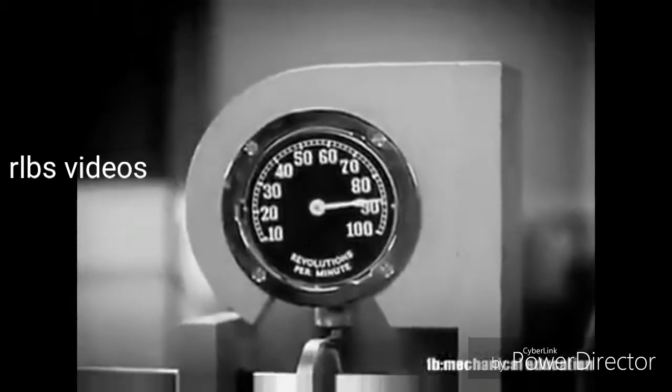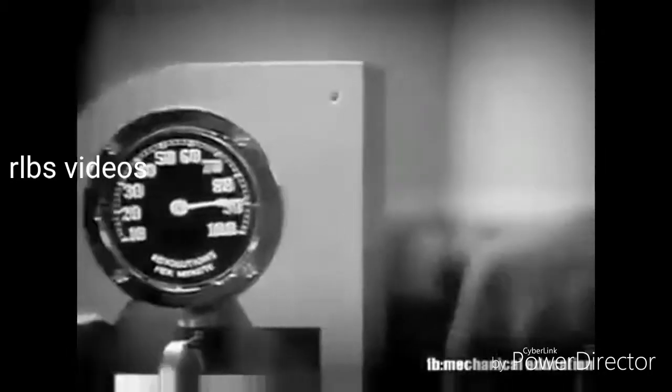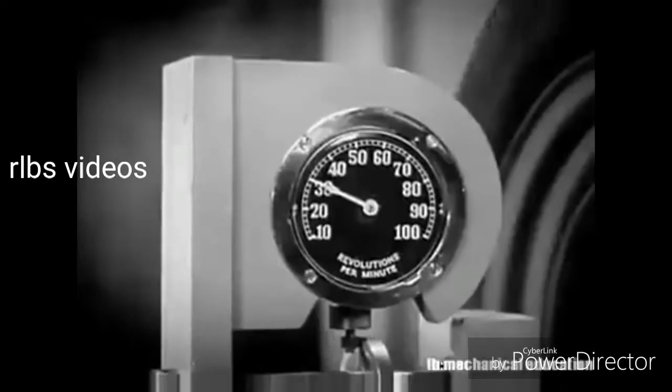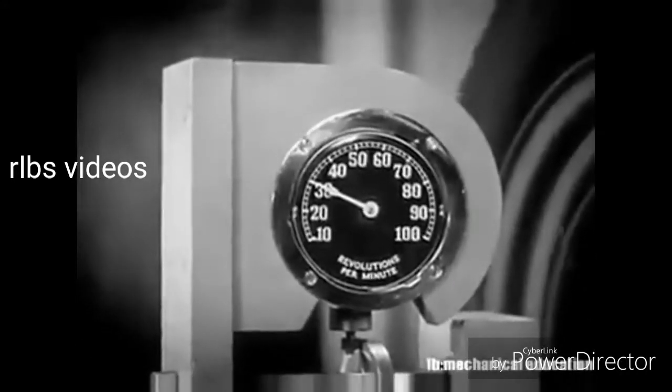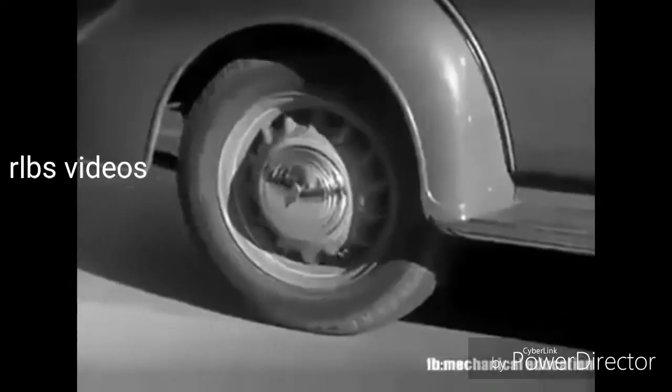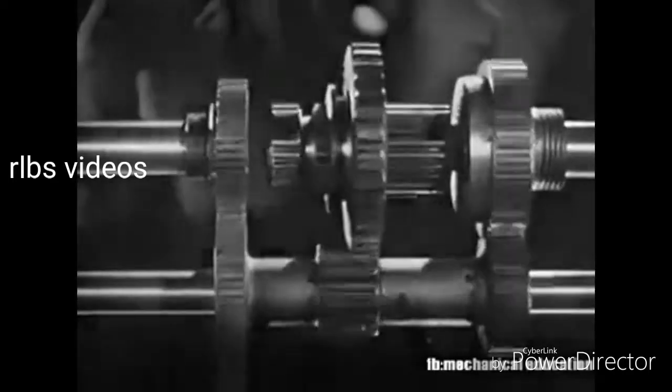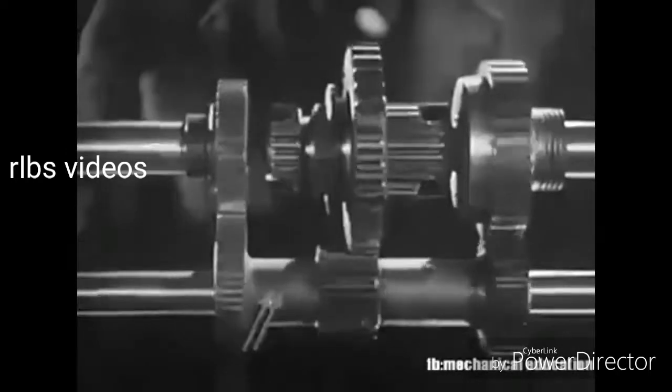The engine on this model is running at a constant speed of 90 revolutions a minute. With low gears in mesh, the rear wheel is turning at 30 revolutions a minute, about a third the speed of the engine, but with three times the force. The power is going through these gears in the transmission.